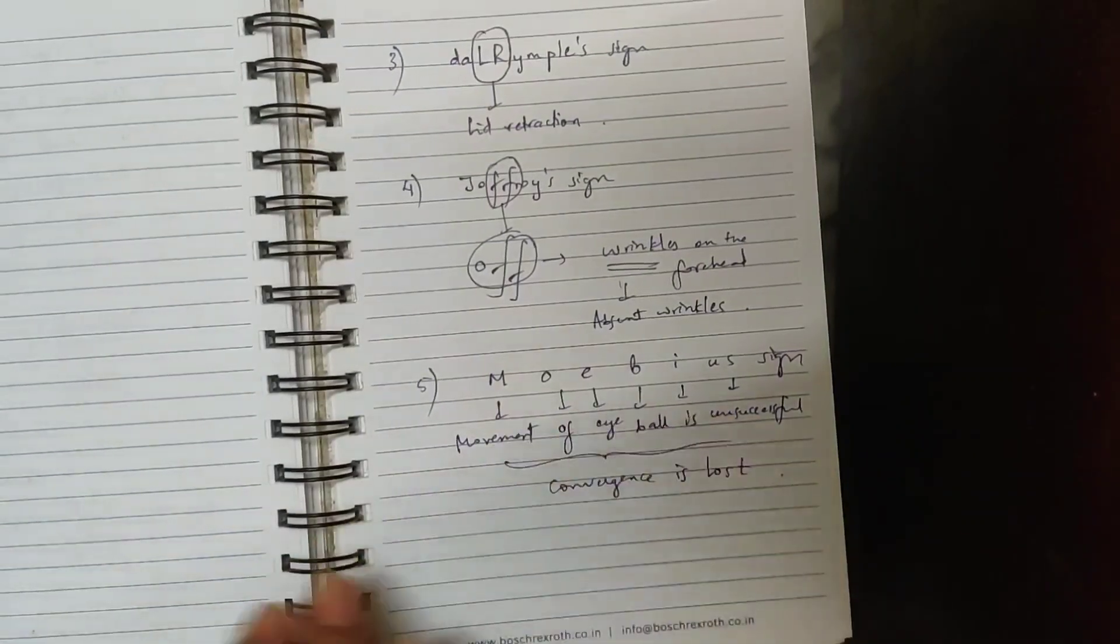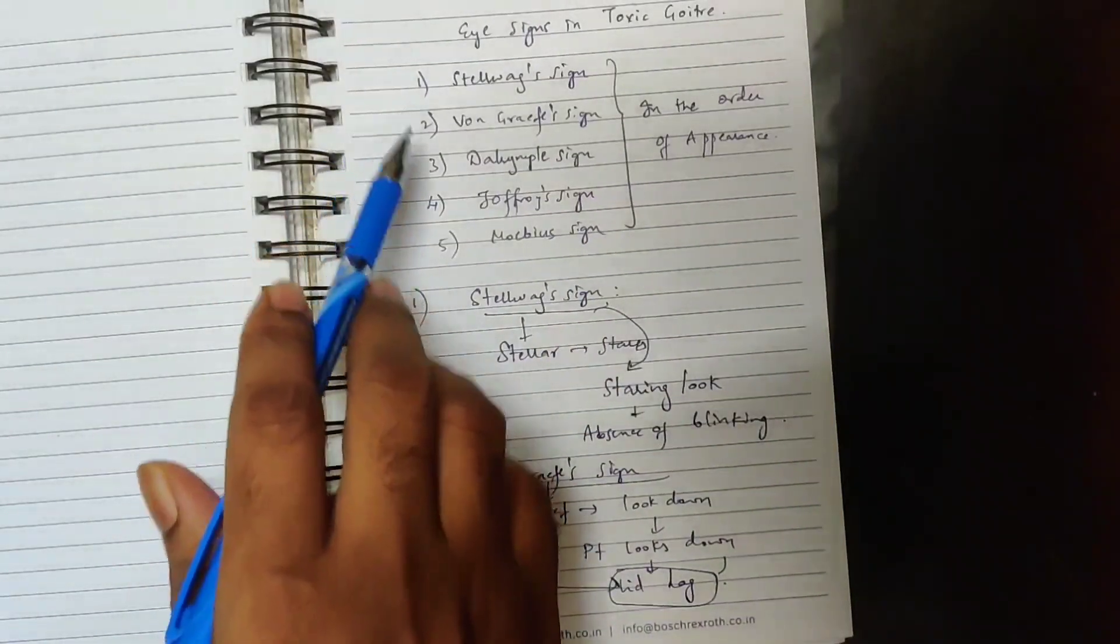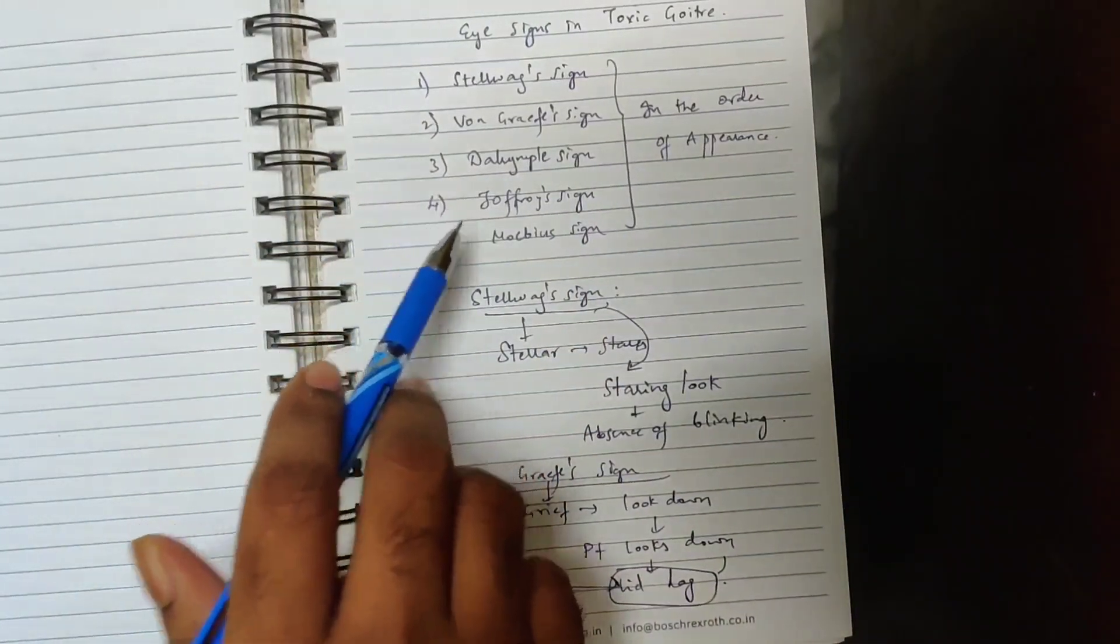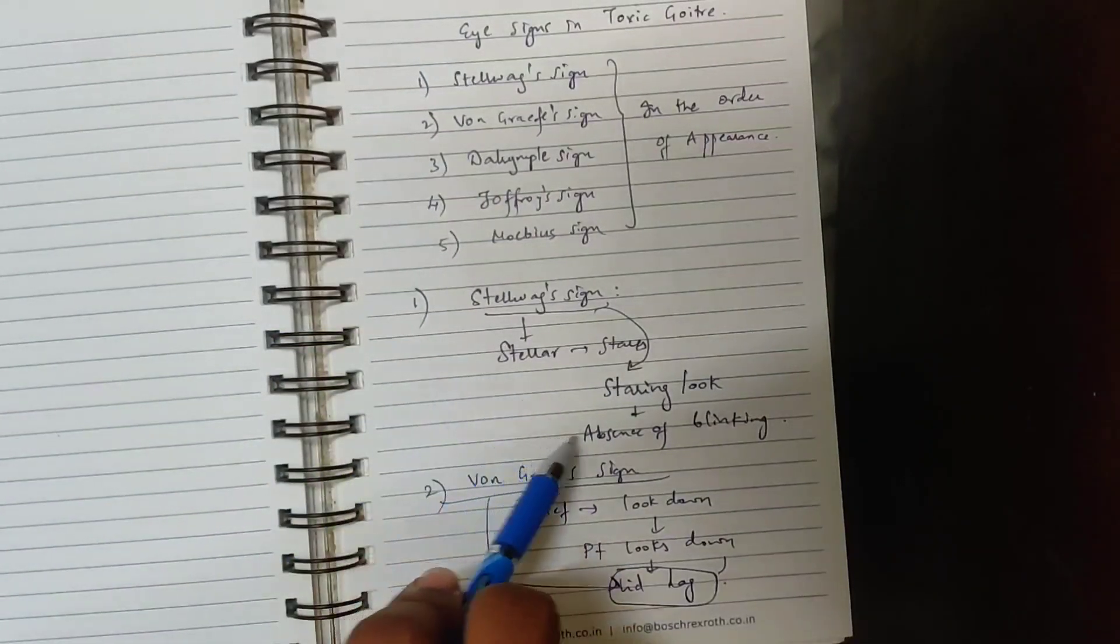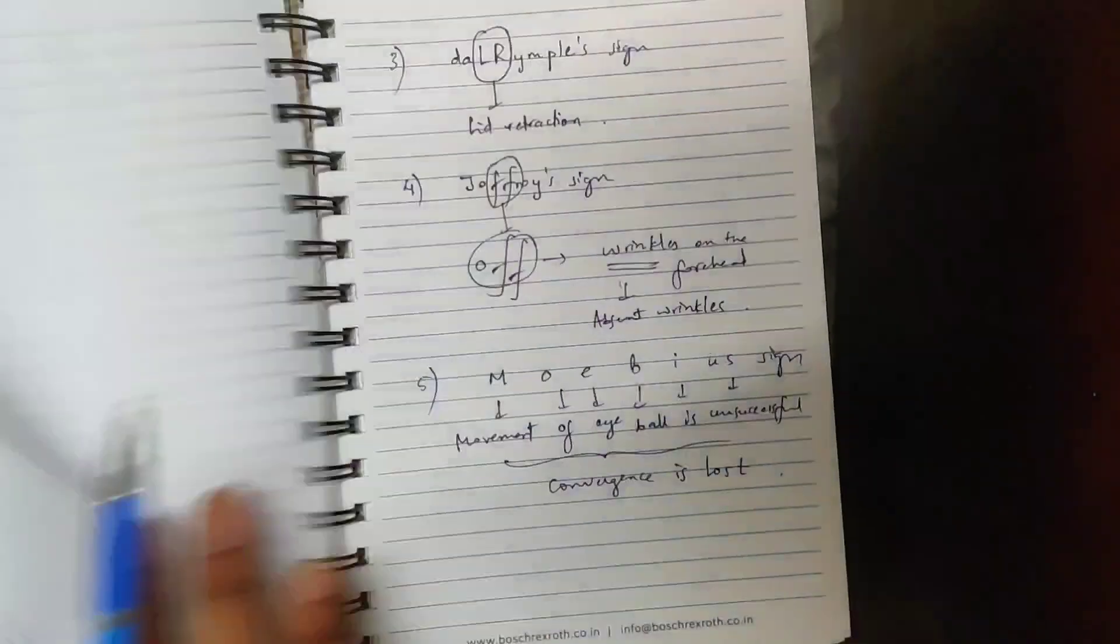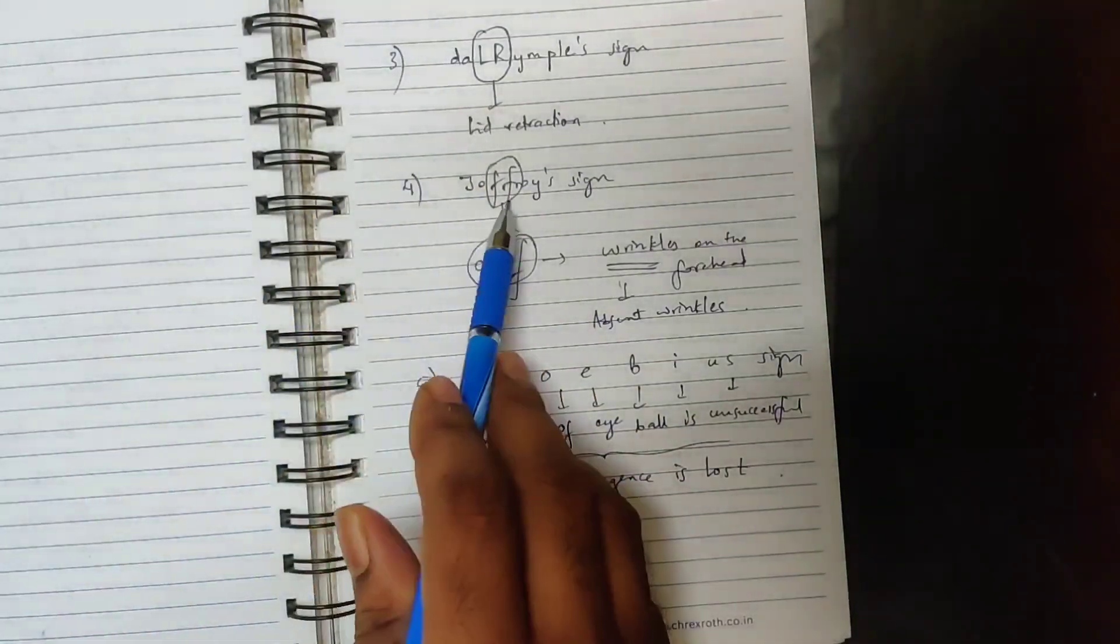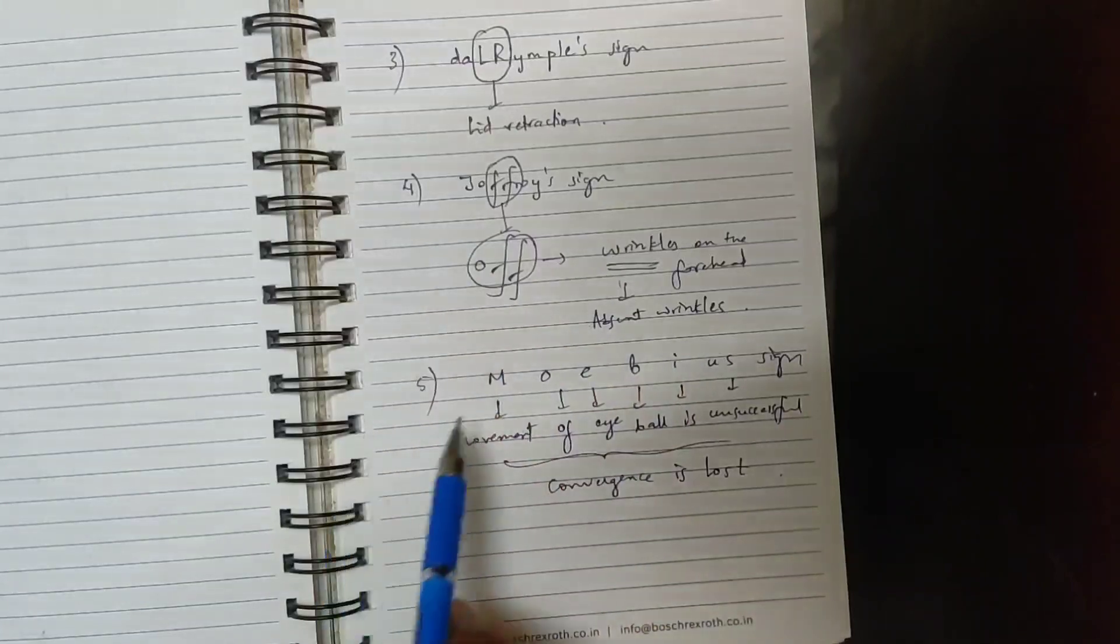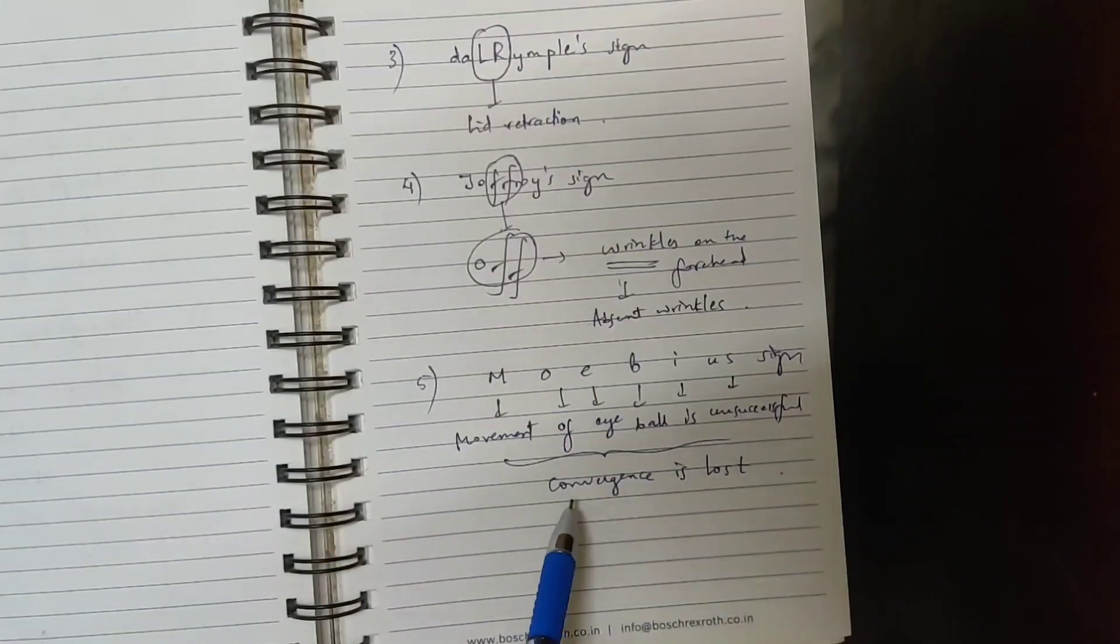I will revise the eye signs quickly for you. In order of appearance, the signs are Stelwag, Von Graf, Dalrymple, Joffroy, and Moebius. First sign is Stelwag, which is staring look. When the patient looks down, Von Graf is lid lag. Dalrymple is lid retraction. Joffroy is absent wrinkles. And Moebius is movement of eyeball is unsuccessful, or in short, convergence is lost. That's it, friends.